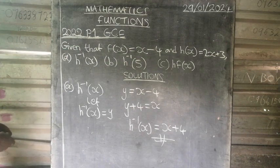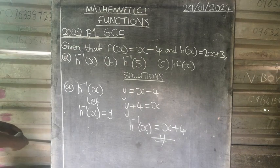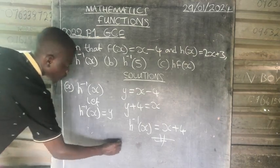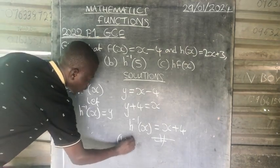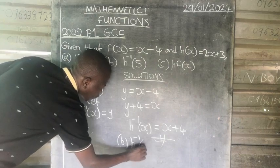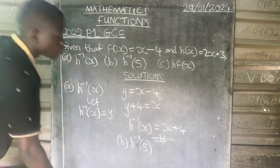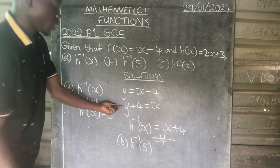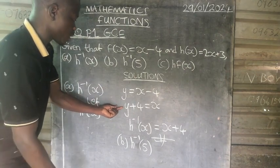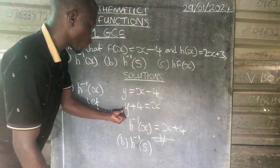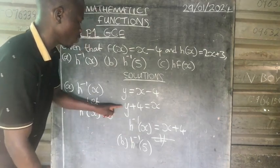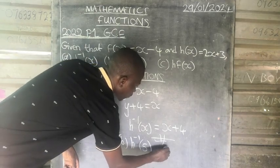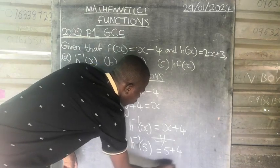So this is our inverse. We go to Part B, h inverse of 5. For h inverse of 5, when we reach this stage, instead of replacing y with x, this time we replace y with 5, which is going to be 5 minus 3 over 2, which equals 1.